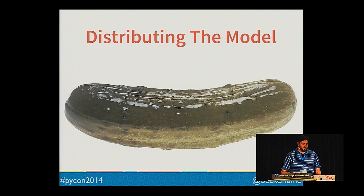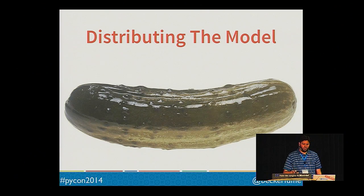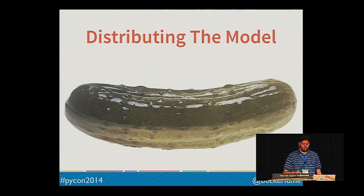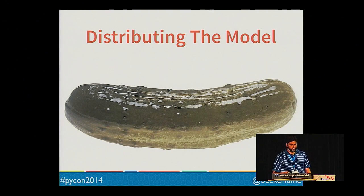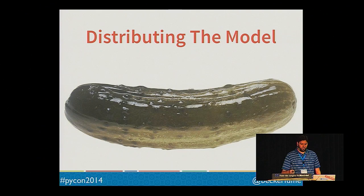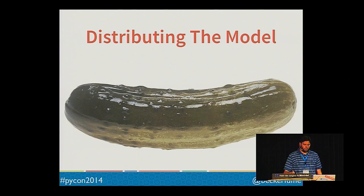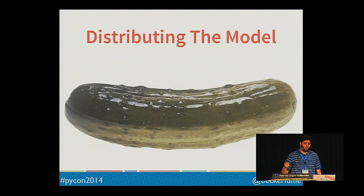Now that you have this awesome model, one of the first problems to solve is how to distribute it. The recommended method is to use the built-in pickle module to serialize the model to disk and distribute it as part of your application. You can store it in a database such as GridFS or Amazon S3. In the case of my model, it took up roughly 200 megabytes in memory — pretty big, but easily storable on disk and, more importantly, in memory.